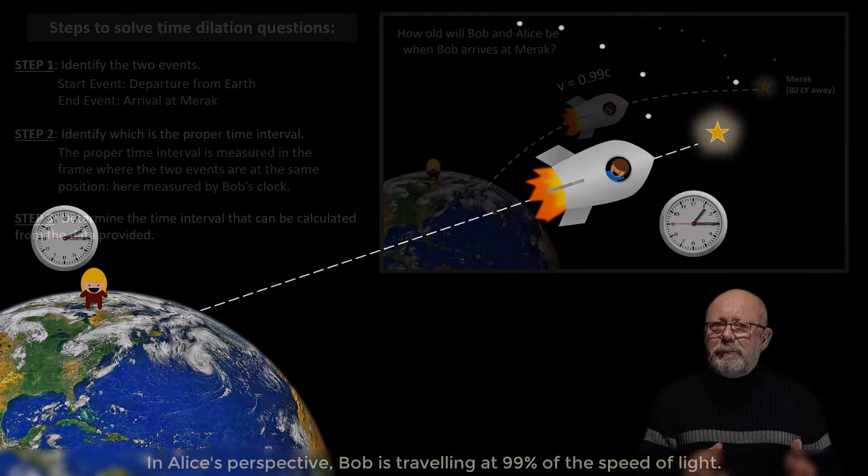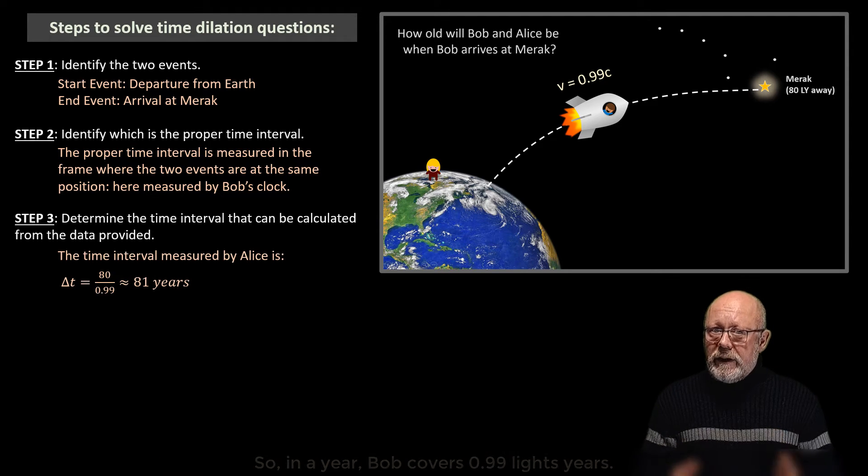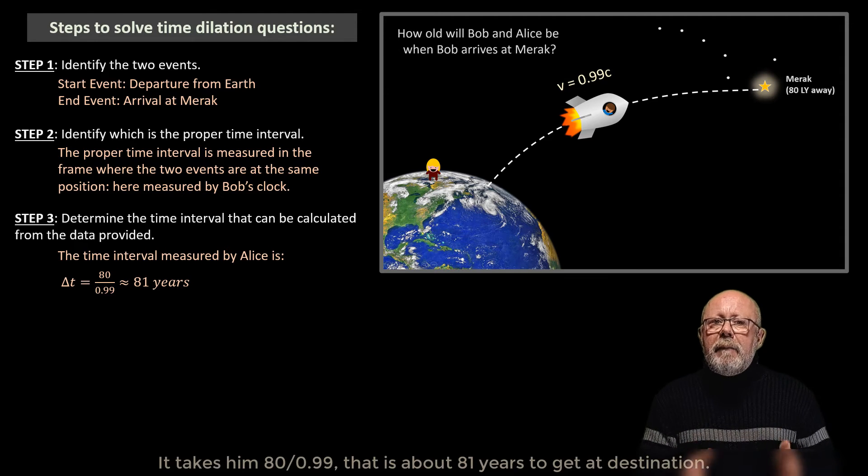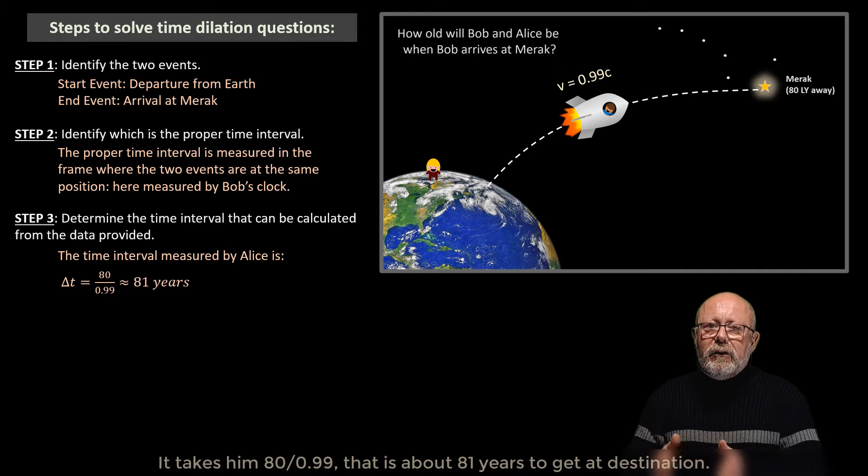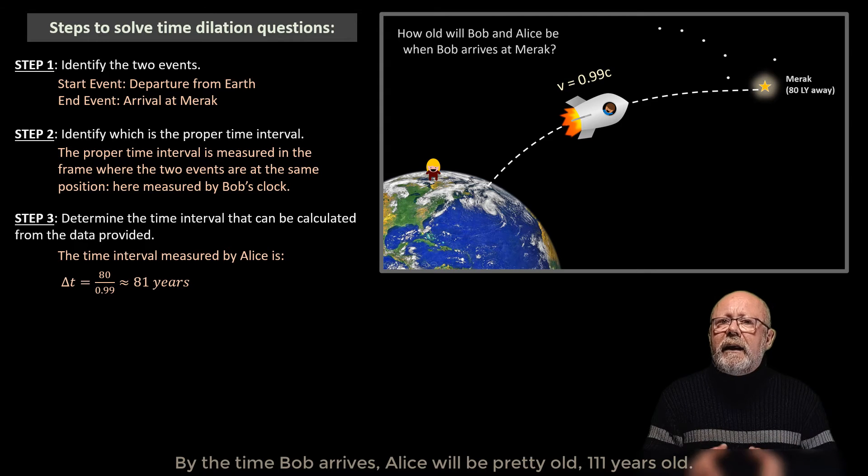In Alice's perspective, Bob is travelling at 99% of the speed of light. So every year, Bob covers 0.99 light years. It will take him 80 divided by 0.99, that is about 81 years, to get at destination. By the time Bob arrives, Alice will be pretty old, 111 years old. What about Bob? How old will he be?